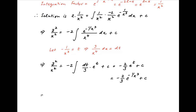Cross multiplying, we get y square is equal to x square times c minus 2 upon 3 times e raised to the power minus 1 upon x cube. And this is the required solution.